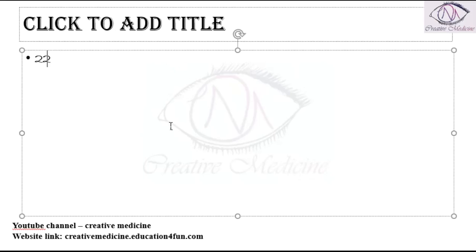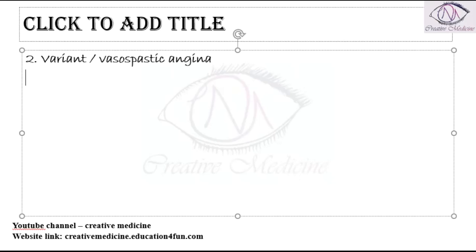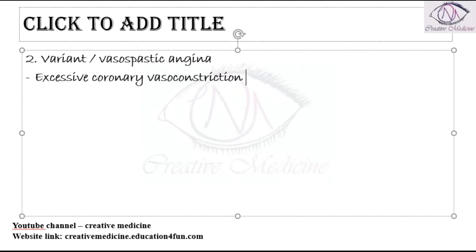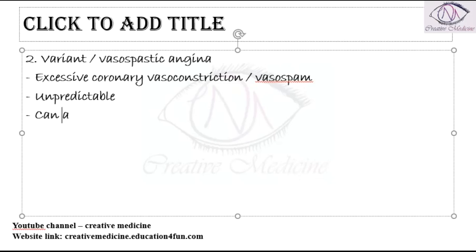Second we have variant angina, also called vasospastic angina. The main problem in variant or vasospastic angina is the presence of excessive coronary vasoconstriction, occurring due to vasospasm. Because of this vasospasm, it is an unpredictable type of pain. It can also occur at rest. Mainly there should be coronary vasoconstriction.